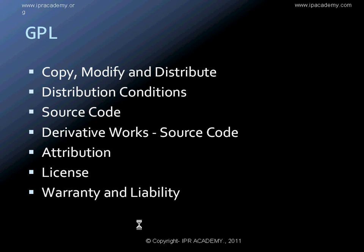One of the most important and highly debated aspects of this license concerns what amounts to a derivative work. As per the license, if a derivative work is created from a software governed by GPL, then that derivative work will also be governed by GPL and its source code has to be made available. This is significant because many times when you take open source software and combine it with your own proprietary software, you do not want your proprietary software to be governed by that open source license. That is why this aspect of derivative work is very highly debated.